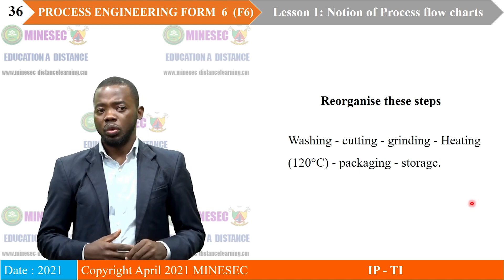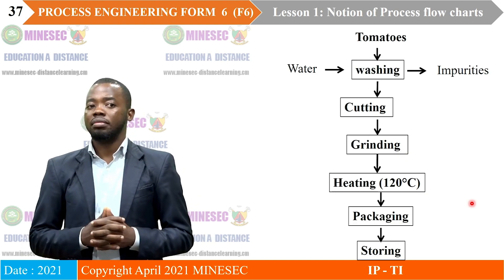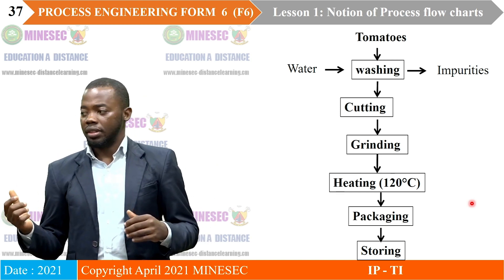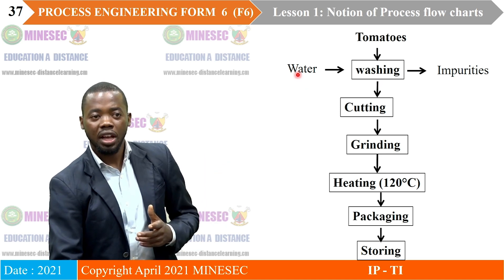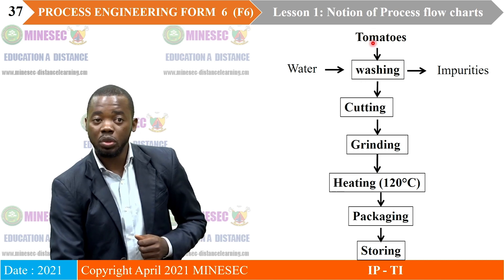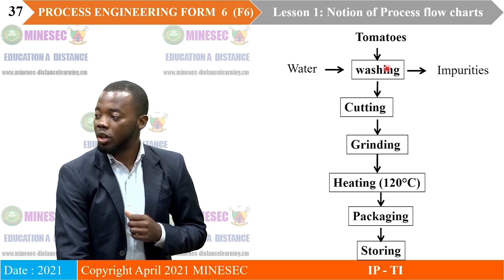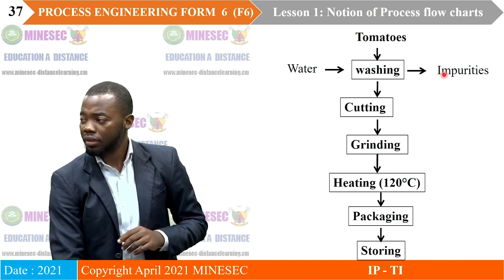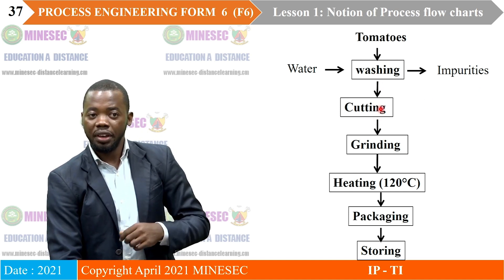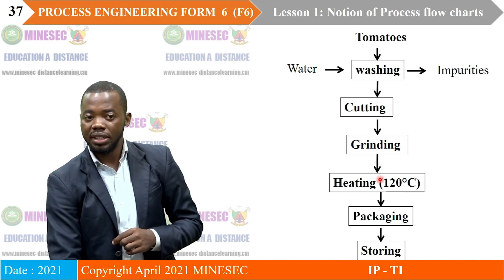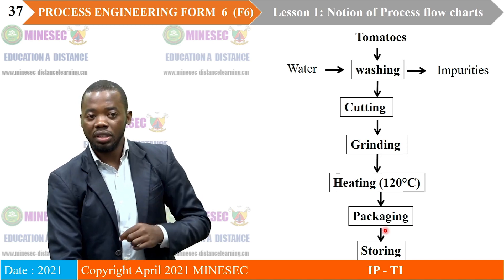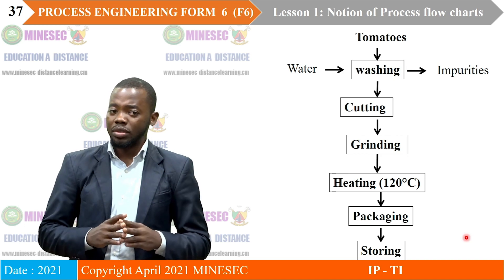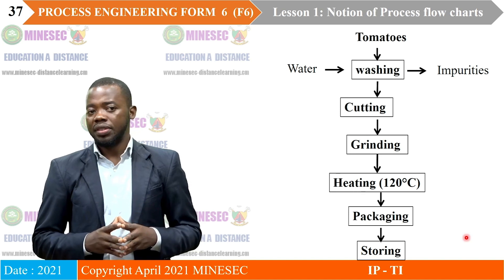Drawing the block diagram: operations are in blocks, raw material enters at the left and exits at the right. Tomatoes and water enter the washing block, which removes impurities. The process then proceeds through cutting, grinding, heating at 120°C, packaging, and finally storage. This block diagram is straightforward — with a bit of common sense, you should not have serious difficulty working with these diagrams.